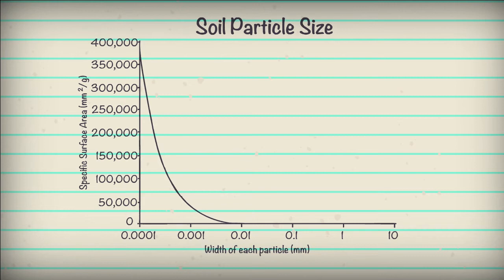This set of data is already plotted for us. We can see it on this curve. To find the values at any point on the curve, we simply draw a line from the curve to each axis. Let's find the particle surface area and size for this point on the curve. We'll make a line to the y-axis to find the surface area. That's about 75,000 millimeters squared per gram. Now we make a line to the x-axis for the particle size.